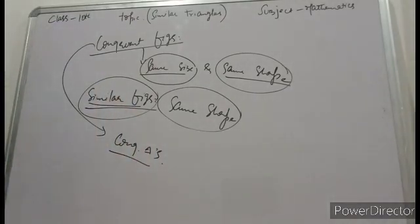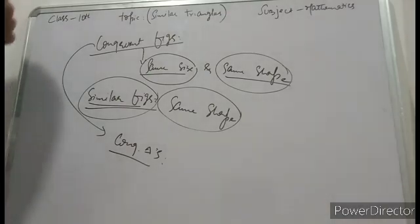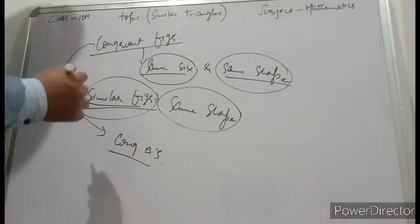Congruent triangles: two triangles must be congruent. So congruent triangles, two triangles same size.